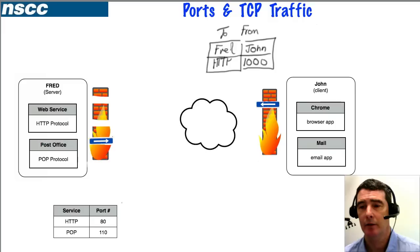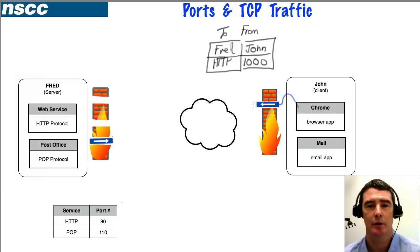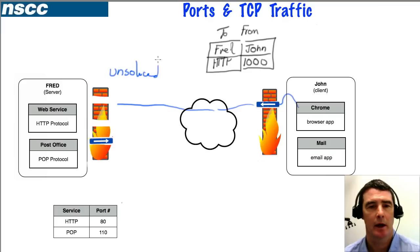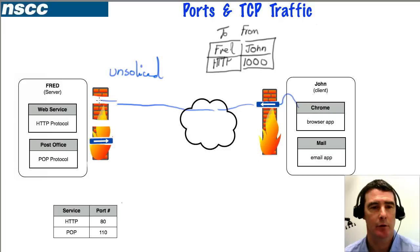The packet goes out through John's firewall, which allows everything outbound, travels through the internet, and hits Fred's firewall. At this point the traffic is called unsolicited traffic because Fred did not know it was coming. However, the firewall sees it's addressed to Fred and uses the HTTP port, which is allowed, so it passes through and is directed to the web service software.